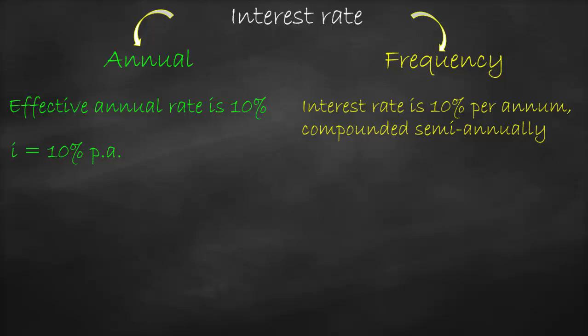If we have a frequency, put into words it will be: interest rate is 10% per annum, compounded semi-annually. Every time you find the word 'compounded,' it means it is paid many times per year. That's why we look at what's written after 'compounded.' Compounded means payable.